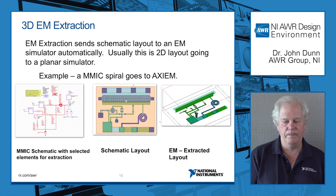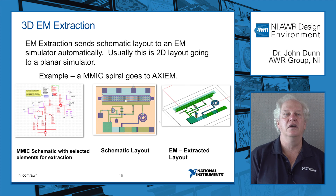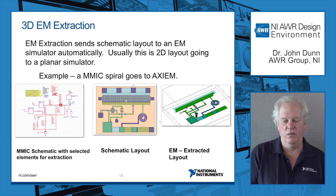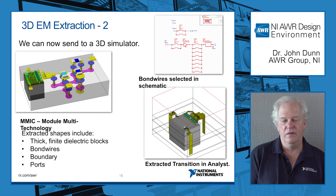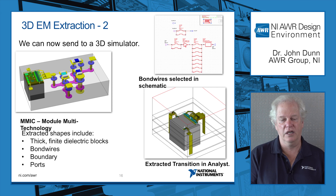We can send a layout from the schematic layout directly to EM and run it — called EM extraction — and we've extended that now to our 3D simulators. For example, we can now send things to Analyst in 3D extraction. These pictures show Axiom, our planar simulator, where selected red highlighted nets from the schematic layout get extracted automatically to the EM. For Analyst, a MMIC on a board with bond wires connecting them — we select those elements in the schematic and they get extracted to EM. We've extended the concept of EM extraction to 3D simulators, making it easier, less error-prone, and more unified for the designer.